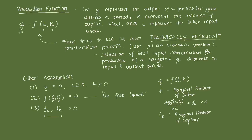Similarly, the marginal product of capital, F_K, is the partial derivative of the production function with respect to K, holding labor constant. F_K > 0, which makes sense because increasing capital while holding labor fixed would likely increase output. Those are the initial assumptions of the production function.